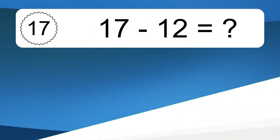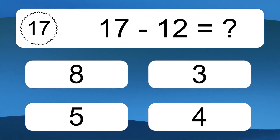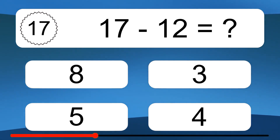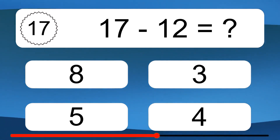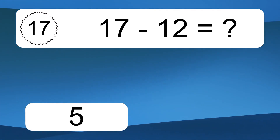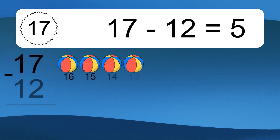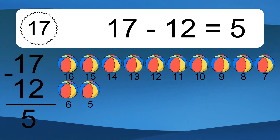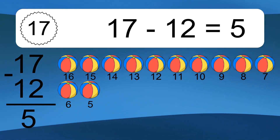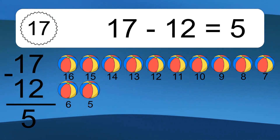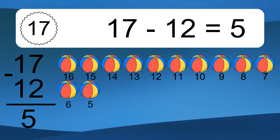17 minus 12 equals what? 17 minus 12 equals 5. Let's count it: 16, 15, 14, 13, 12, 11, 10, 9, 8, 7, 6, 5.